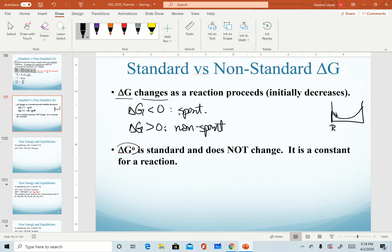Delta G naught for a given reaction is standard and does not change. It is a constant value, as we saw in a previous video, where we calculated this two different ways for a given reaction and got the same value. Remember that this quantity is telling us whether a system is product or reactant favored at equilibrium. Delta G naught relates to K, delta G, because it changes as a reaction proceeds, relates to Q.